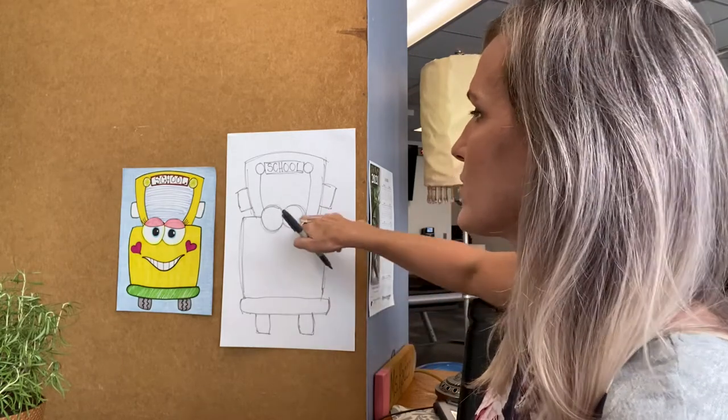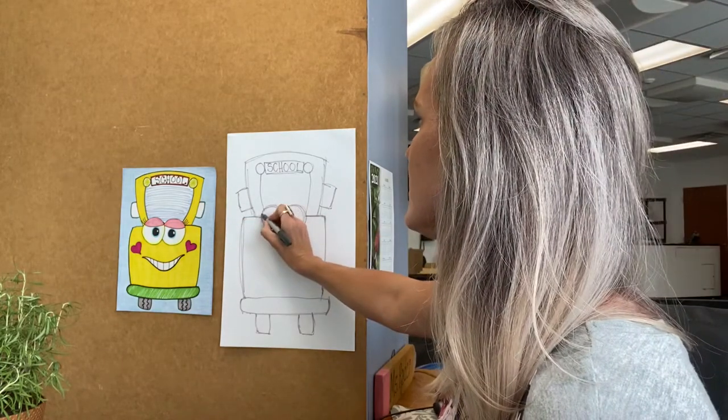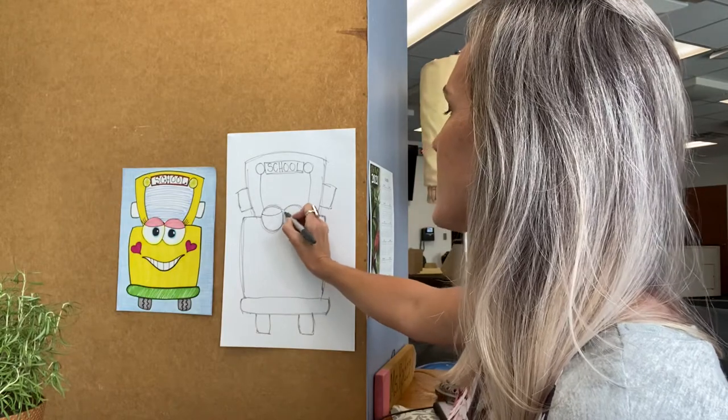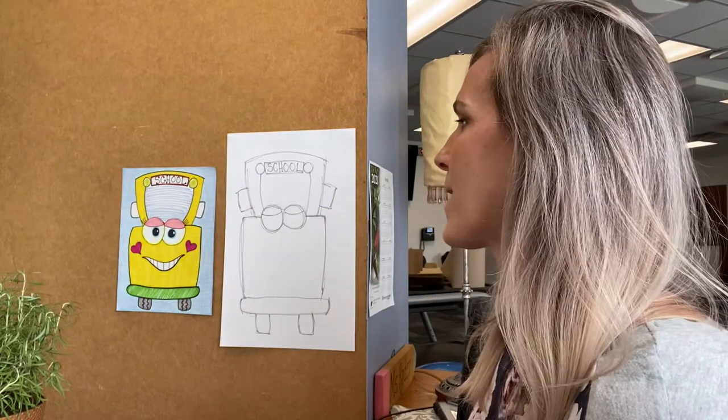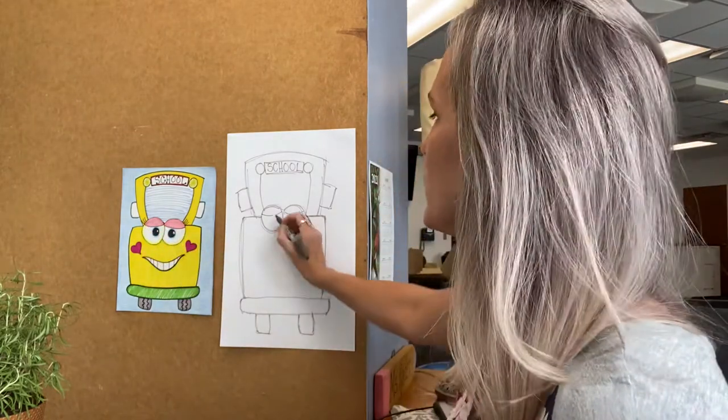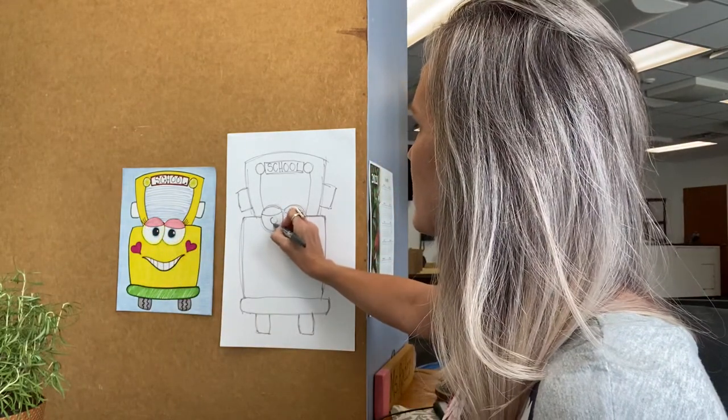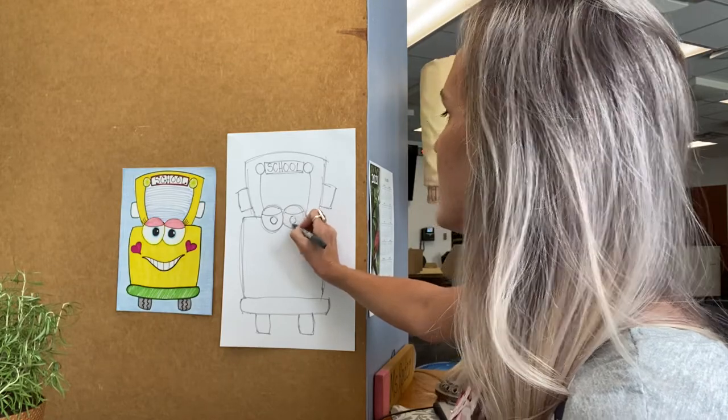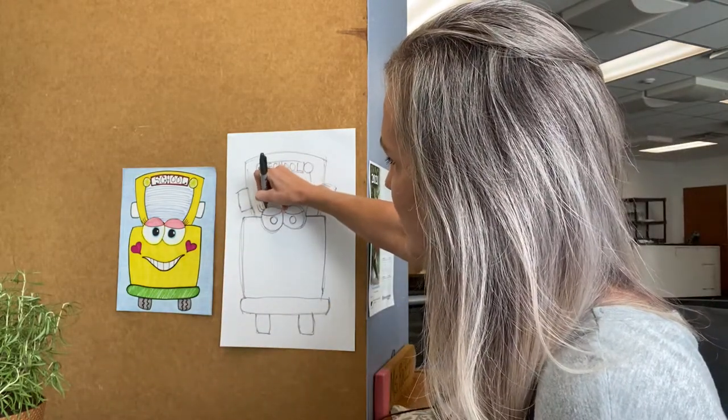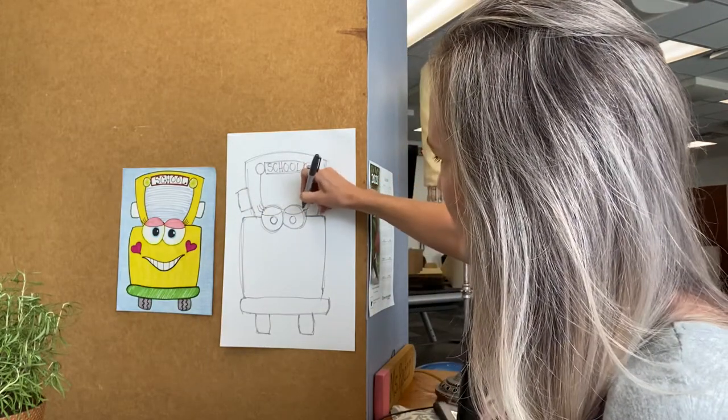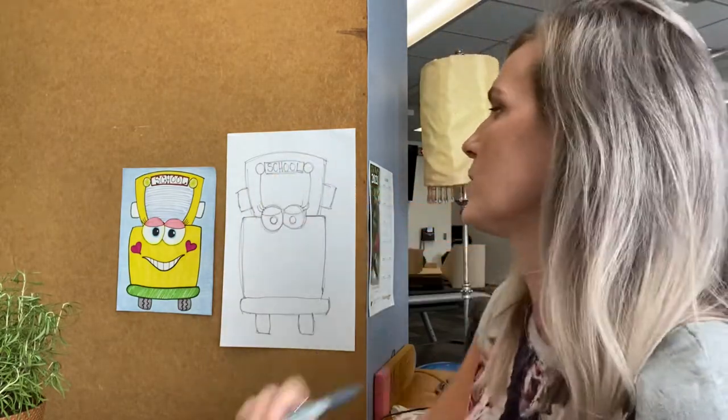We're going to add details on the eye so I'm going to add eyelids. It's just a scooped shape kind of like a little upside down rainbow. I'm going to add circles for the pupils, those are the black parts of the eyes. And my bus, I wanted her to be kind of pretty so I added some eyelashes. You don't have to add the eyelashes if you don't want to.